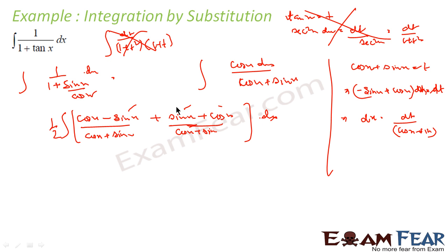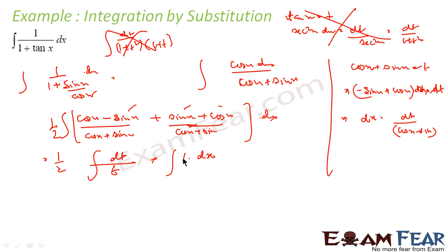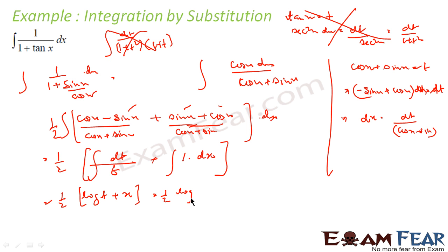Now if cos x + sin x = t, then (cos x − sin x) dx = dt, and the remaining term is simply 1·dx. Taking the overall factor of ½, this integral becomes ½ · log t + x, which is ½ · log|cos x + sin x| + x/2 plus a constant.